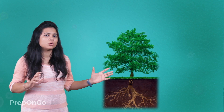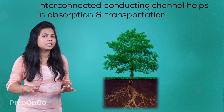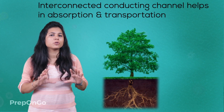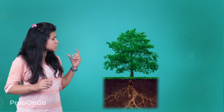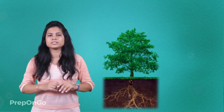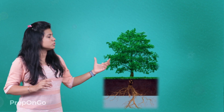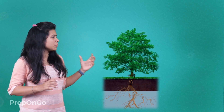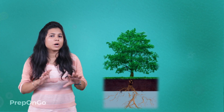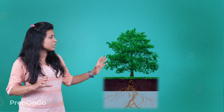Soil is the only source from where the plant can absorb water, and the interconnected conducting channels help in this absorption and transportation. The special cells near the roots absorb ions from the soil. When the roots absorb ions, there is a concentration change, and this difference is removed by the roots also absorbing water in compensation for the difference between soil concentration and root concentration.